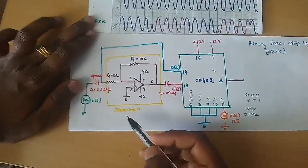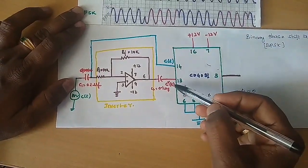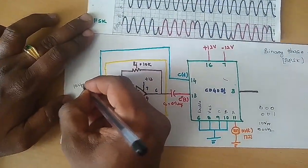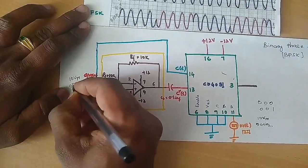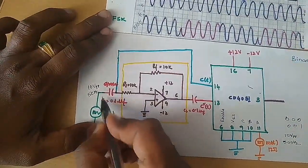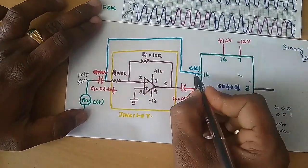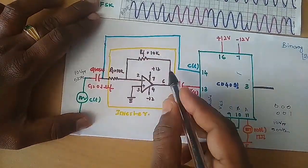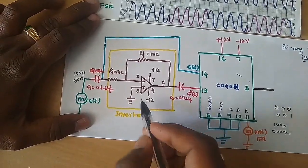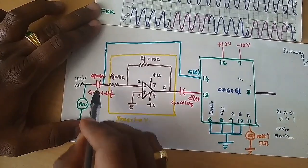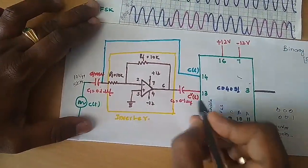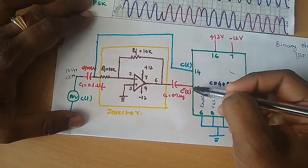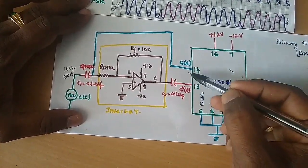To generate a BPSK signal, we require a carrier signal C(t) and its inverted version C*(t). The carrier signal C(t), around 10 V peak to peak amplitude and 5 kHz frequency, is directly connected via a coupling capacitor to pin number 14. The same carrier signal C(t) is passed to an inverter — an op-amp used as a unity gain inverting amplifier — to produce C*(t), where C(t) and C*(t) are the same in amplitude and frequency but have a phase shift of 180 degrees.